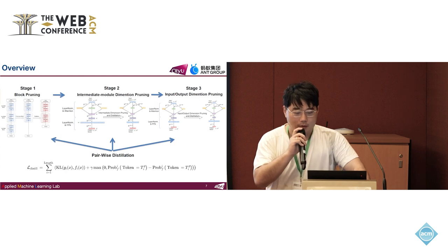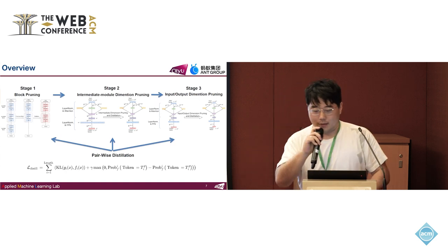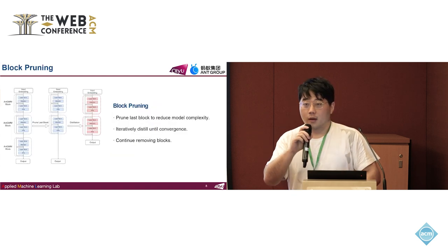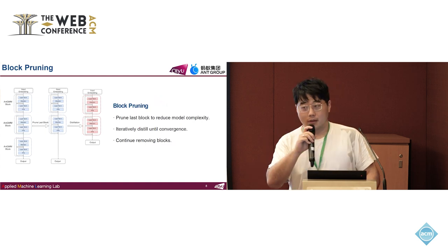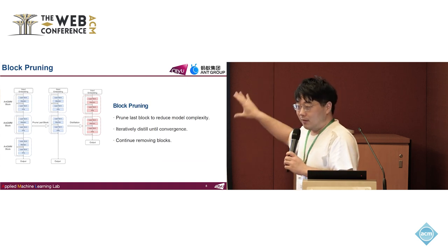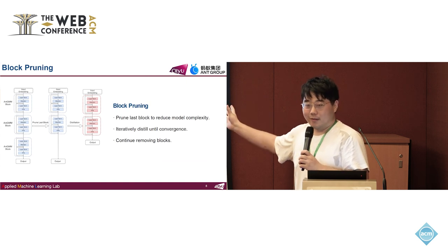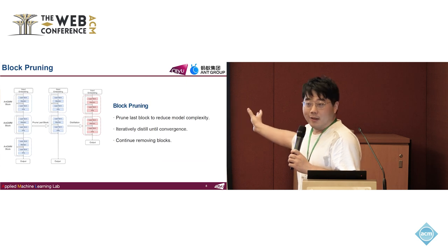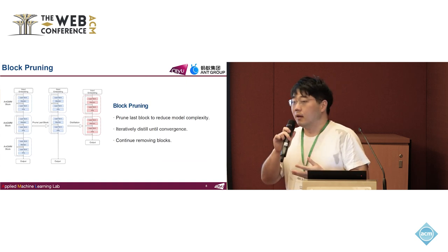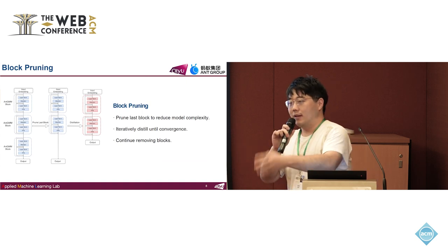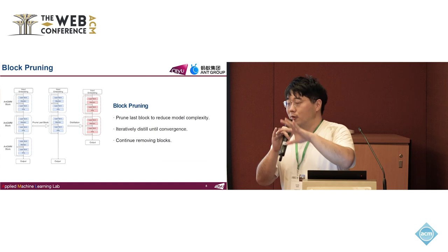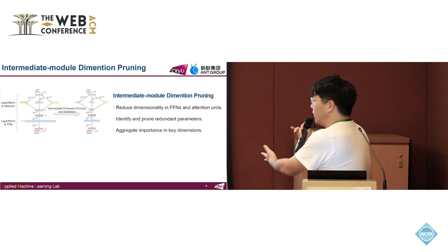Let's step into our framework. Our framework is a multi-stage compression framework with a well-designed distillation loss. The first stage is block pruning. Large models have a lot of transformer blocks, so we need to remove this block redundancy first. Block pruning means we remove blocks one by one, then distill to recover knowledge, and continue step by step. If performance drops dramatically, we stop and move to the second stage.